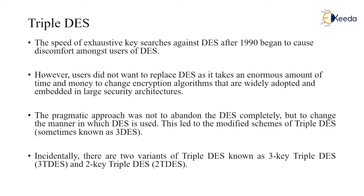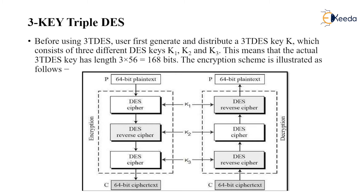This led to the modified scheme of Triple DES, sometimes also known as 3DES. There are two variants: three-key Triple DES (3T DES) and two-key Triple DES. Before using 3T DES, a user first generates and distributes a key K consisting of three different DES keys K1, K2, and K3. This means the actual 3DES key length has become 3×56 = 168 bits, compared to the previous single DES key of only 56 bits.